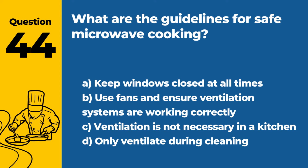Question 44. How do you ensure proper ventilation in a kitchen to maintain food safety? a. Keep windows closed at all times. b. Use fans, and ensure ventilation systems are working correctly. c. Ventilation is not necessary in a kitchen. d. Only ventilate during cleaning. Answer b. Use fans, and ensure ventilation systems are working correctly. Proper ventilation in a kitchen is essential for maintaining food safety, and it involves using fans and ensuring that ventilation systems are functioning correctly to remove cooking fumes and reduce heat.